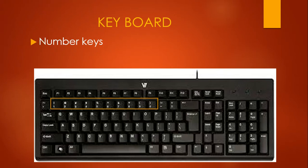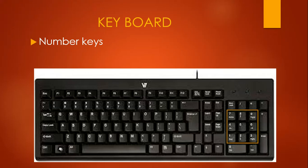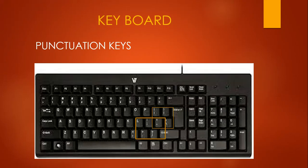Number keys are used to type numbers. This highlighted portion is showing number keys. Punctuation keys are used to put different punctuation marks in the document. On this keyboard, you can also see the highlighted portion — these are all punctuation keys.